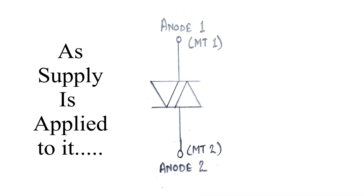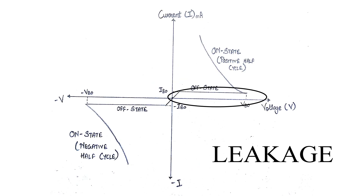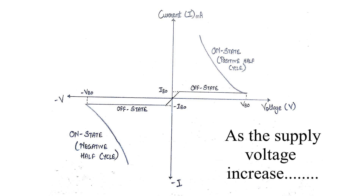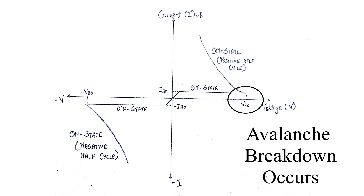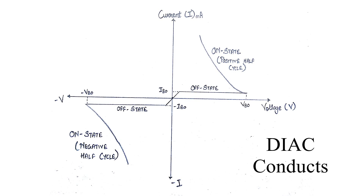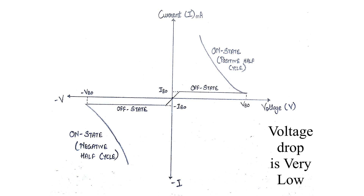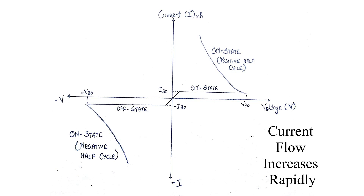As soon as the supply voltage, whether positive or negative, is applied across the terminals of the DIAC, only a small leakage current can flow through the device. So the device operates in either forward or reverse blocking modes. When the applied voltage is increased to a value equal to the breakover voltage, an avalanche breakdown occurs at the reverse bias junction. Then the DIAC starts conducting and exhibits negative resistance characteristics — that is, current increases with decreasing values of applied voltage. The voltage drop during conduction is very small and equal to the ON state drop of the DIAC. The current flow increases quickly when the DIAC enters conduction, so for safe operating levels a resistance is connected in series with the DIAC.